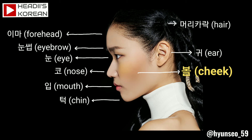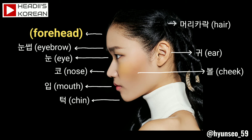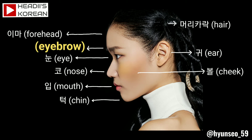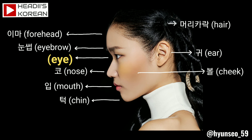Well done! Now let's see if you remember these words. Let's try the quiz. What is forehead? It's 이마. What is eyebrow? It's 눈썹. What's eye? It is 눈.